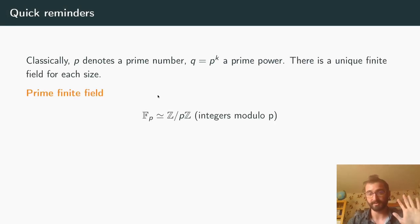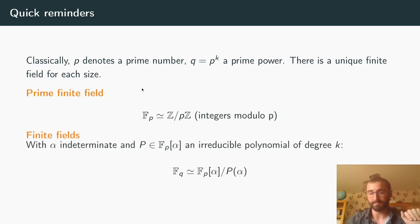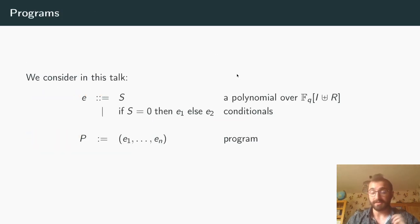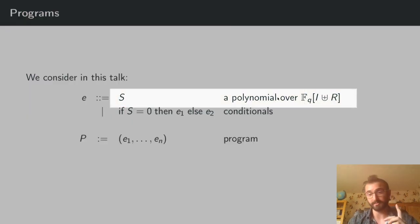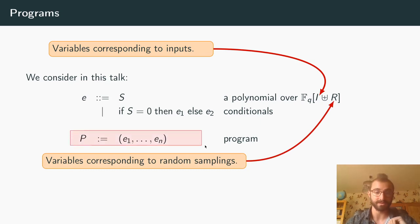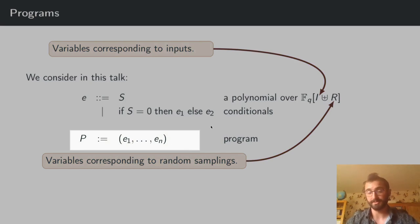I won't delve into details about finite fields. You just need to know that you have a base finite field — a set of integers of size P for some prime P — and then you can consider extensions of this finite field for each P to the power of some K. Based on this, we look at programs, and we can see the base expressions as polynomials where we distinguish the variables into two sets: I for inputs and R for random sampling. Then we add conditionals, and the program is essentially a tuple returning expressions depending on the conditional branches.